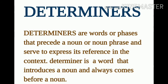Determiners are words or phrases that precede a noun or noun phrase and serve to express its reference in the context. Simply put, a determiner is a word that introduces a noun. It always comes before a noun, not after — determiner noun se pehle aate hain, noun ke baad nahin. It also comes before any other adjective used to describe the noun.